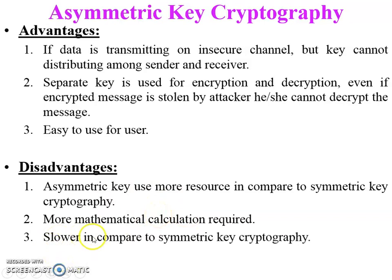Mathematically for scenario two: E(PR_B, X) = Y (encryption using Bob's private key on plain text X produces ciphertext Y). For decryption: D(PU_B, Y) = X (using Bob's public key on ciphertext Y generates the original plain text X). Here PR_B is Bob's private key and PU_B is Bob's public key.